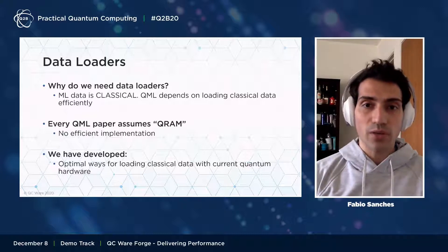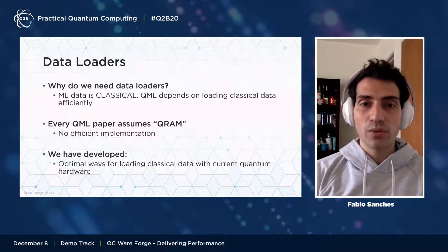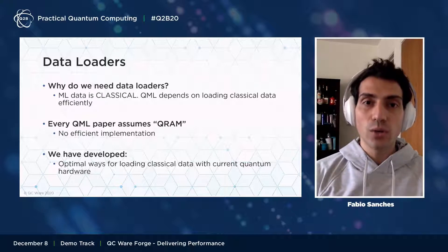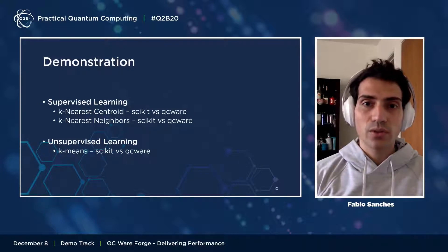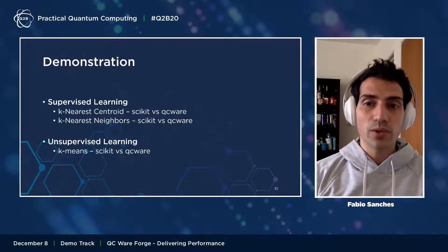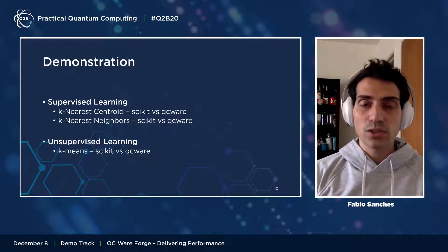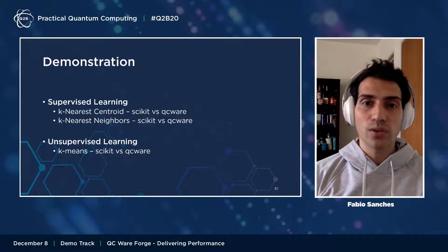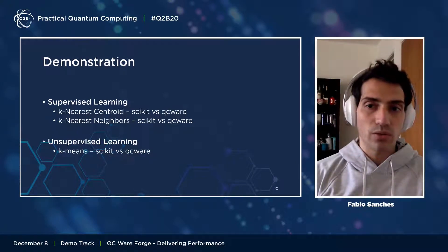Many of you familiar with this may have heard of the QRAM problem. What we've developed is a set of data loaders that provide a flexible way to load classical data on a quantum computer. Now I want to introduce Sean Weinberg, a quantum engineer at QCWare, who's going to be demoing the machine learning functionality — specifically our Q-nearest centroid, Q-nearest neighbors, and K-means algorithm, with a side-by-side comparison between our library and scikit-learn. All those algorithms are backed by our distance estimation and loader functionality.